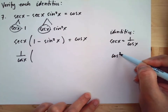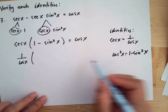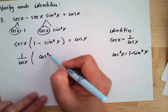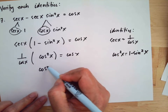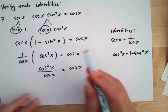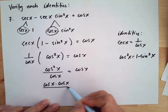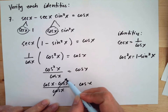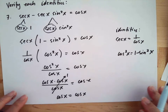Substituting, we have one over cosine x multiplied by cosine squared x. This gives us cosine squared x over cosine x. Since cosine squared x is cosine x times cosine x, we get cosine x times cosine x over cosine x. The cosine x over cosine x cancels to one, leaving us with cosine x equals cosine x, which verifies the identity.